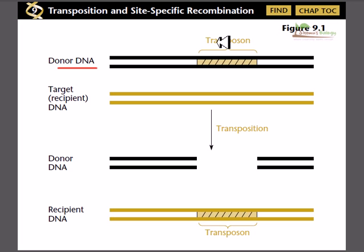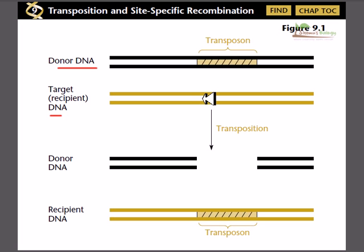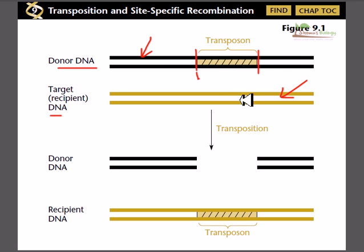In any kind of transposition, you need two or three key things. The first is a donor DNA, in which the transposon — the gene to be transposed — is placed. The second is the target or recipient DNA, onto which the transposed DNA segment will attach. You can see the transposon placed in the donor DNA shown in black, and the recipient DNA in yellow.